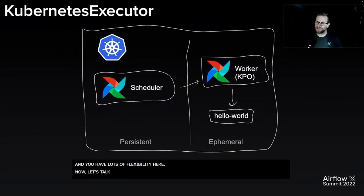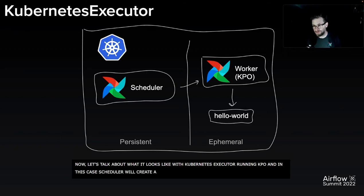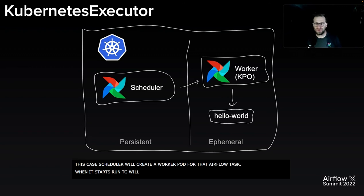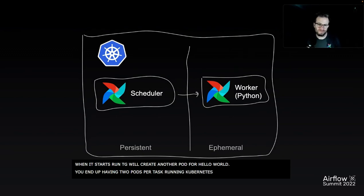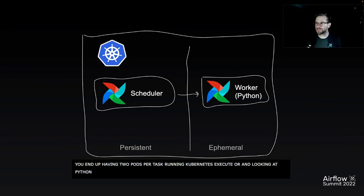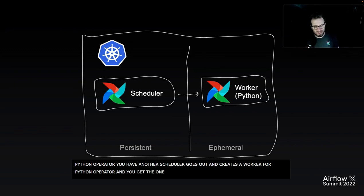Now let's talk about what it looks like with Kubernetes executor running KPO. In this case, the scheduler will create a worker pod for that Airflow task. When that Airflow task starts running, it's going to create another pod for Hello World. So you do end up having two pods per task when running Kubernetes executor and KPO together. However, with a Python operator, the scheduler creates a worker for that Python operator and you just get the one pod. Again, you can run any operator you want when you're running Kubernetes executor.